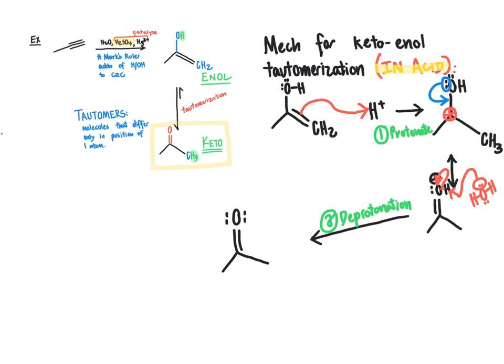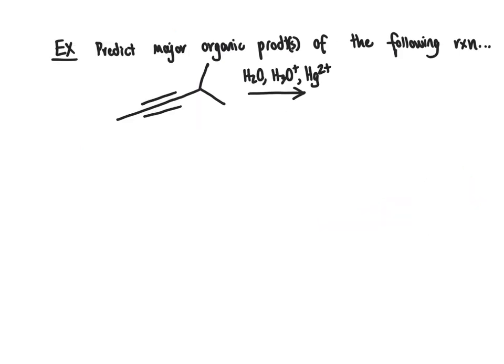Let's do another example problem predicting the product or products of the acid-catalyzed hydration of alkynes. You're encouraged to try this on your own before going through the solution. To set up correctly, I'll first ask what the enol intermediate or intermediates would be. To form the enols, we add H and OH across the carbon-carbon triple bond following Markovnikov's rule. In this case, looking at each of the two carbons of the triple bond, they're both equally substituted, so we need to create two constitutional isomer enols corresponding to adding H and OH to either of those two carbons.